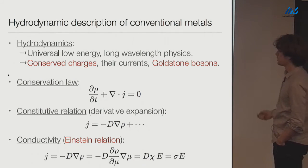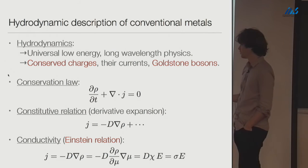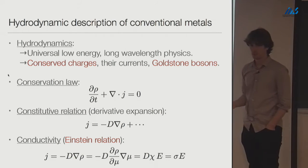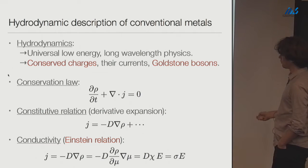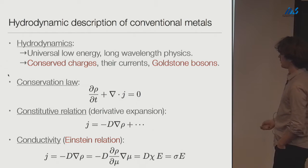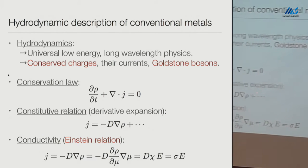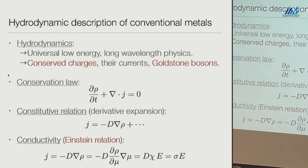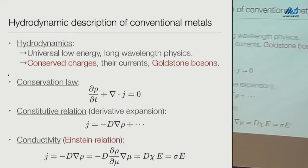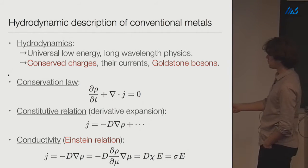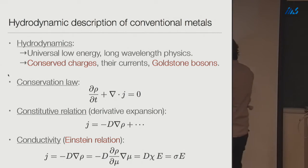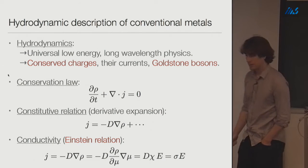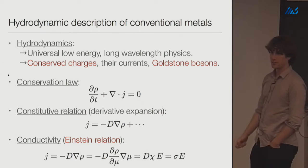To get hydrodynamics you need to close the equations — get a differential equation for one variable. You use constitutive relations, which is where the universal low-energy effective field theory comes in. In a derivative expansion, J equals minus D times the gradient of rho, plus higher-order terms. Plugging back into the conservation equation gives a diffusion equation for rho, where D is the diffusion constant.